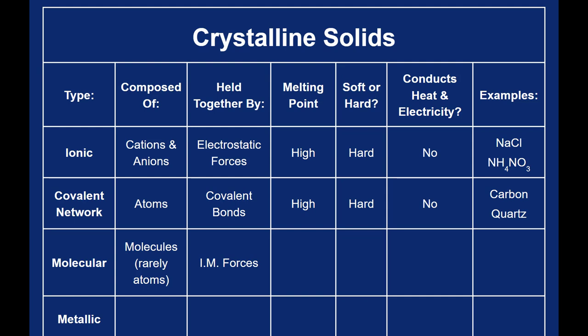Ionic solids are held together by ionic bonds, covalent network solids are held together by covalent bonds, and molecular solids are held together by intermolecular forces. That defines the type of solid.